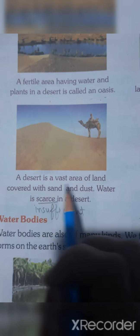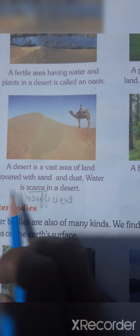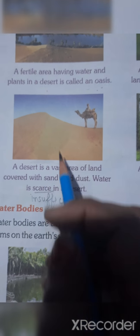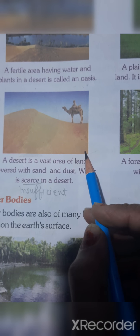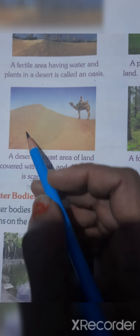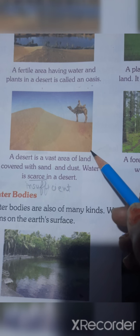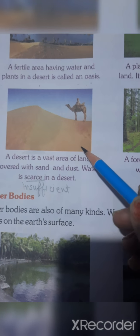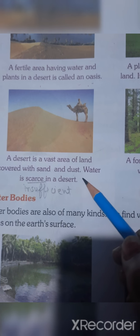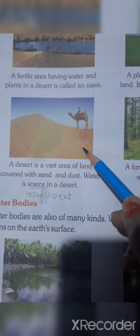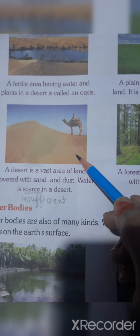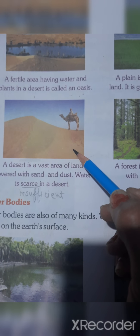A desert is a vast area of land covered with sand and dust. This kind of area we can see in Rajasthan, Dubai, UAE, where the sand-covered parts are there. Water is scarce in a desert — it means water is not sufficient for living; there is less water in a desert area.